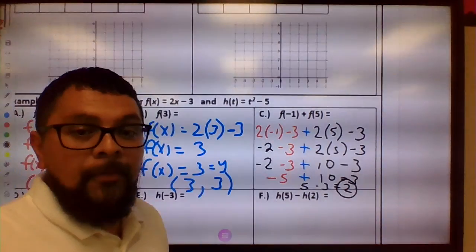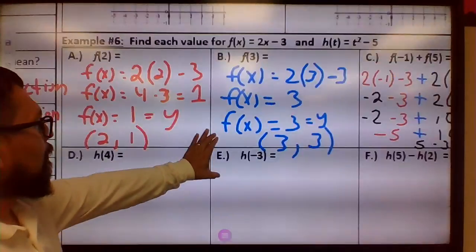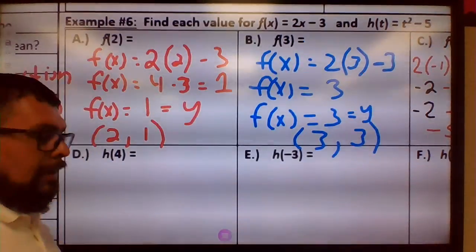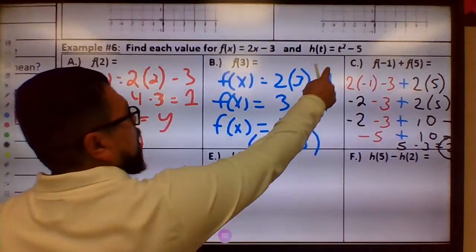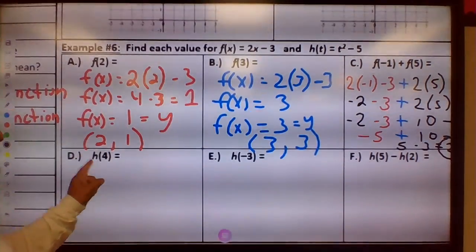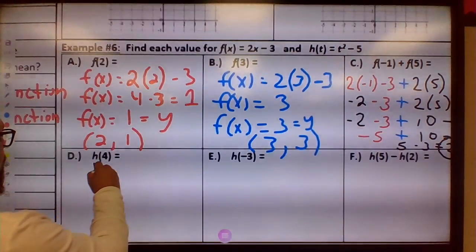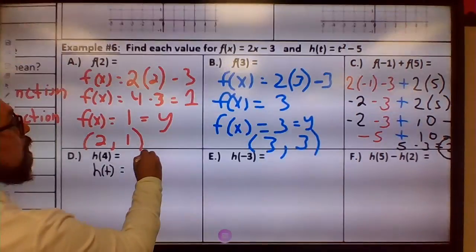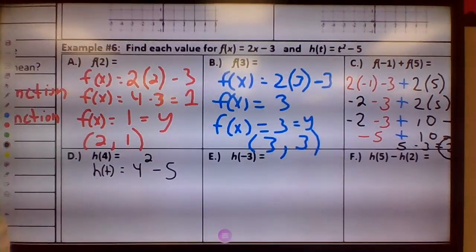Use order of operations. Let me go ahead and guide you to do D. So h of 4, again, this function right here, what does h of t equal when t is 4, so h of t equals 4 squared minus 5, and then keep going from there.